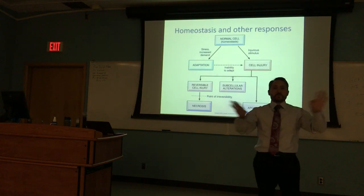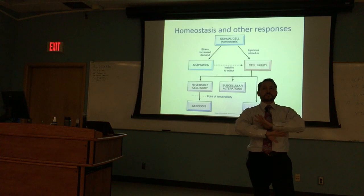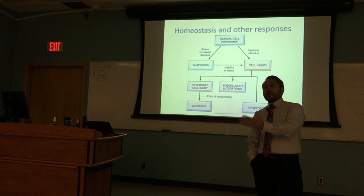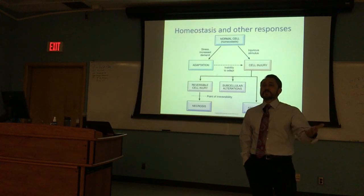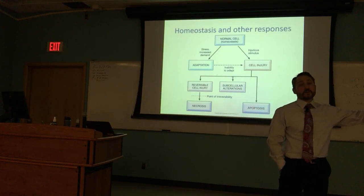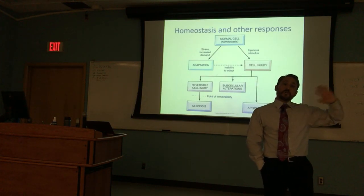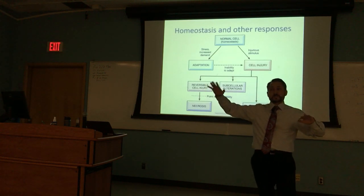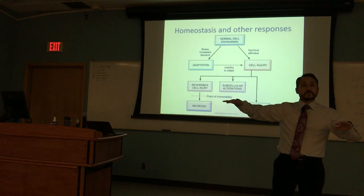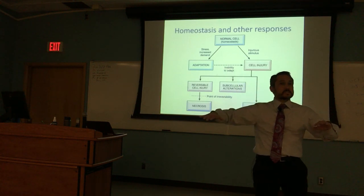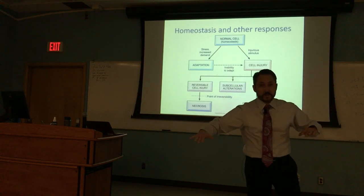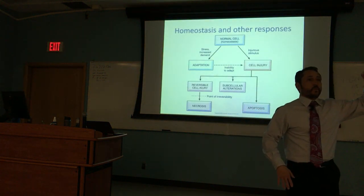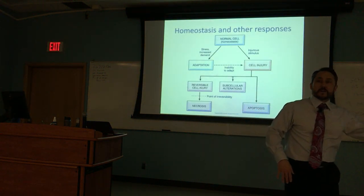Necrosis, by contrast, is disorganized. Necrosis is what happens when tissue becomes infected or when you have trauma. If you go into emergency medicine, you'll unfortunately see a lot of necrotic tissue — it's nasty-looking, foul-smelling, rotten. Apoptosis winds things down very methodically. That's the big difference.